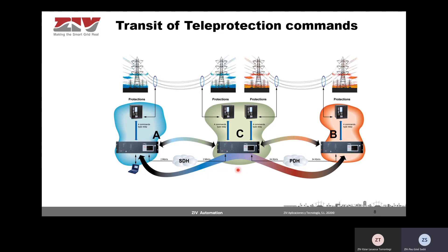The next example is similar to the first one, but uses one of the outstanding features of the teleprotection: the possibility of doing transits. In this example, substation C in the middle is equipped with two communication interfaces that allow the teleprotection to receive commands from substation A and transit them towards substation B, linking substation A to substation B through substation C. At the same time, substation C can also operate with substation A and from C to substation B. This is very common for T-line configurations.